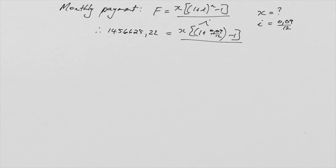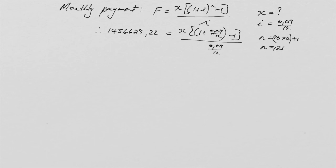Now let's determine n. It is 10 years, so that is 10 × 12 = 120 payments. However, because the first payment is made immediately, we discussed in previous lessons that we must add 1, giving us 121 payments in total.